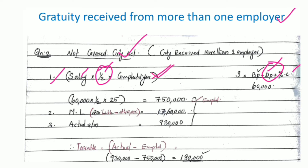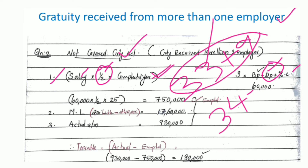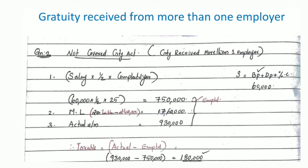A partial year is not counted. We have 25 completed years of service. So the calculation is: 1/2 × 60,000 × 25 = Rs. 7,50,000.